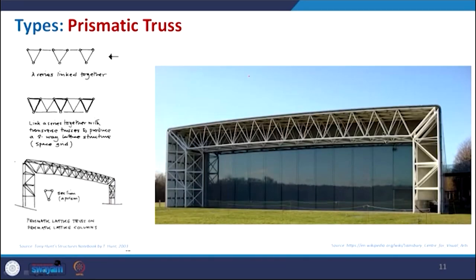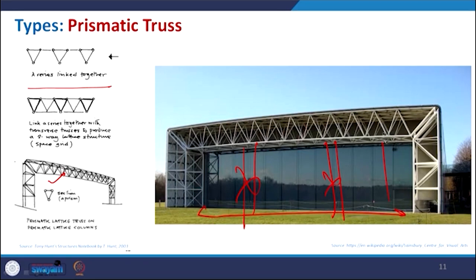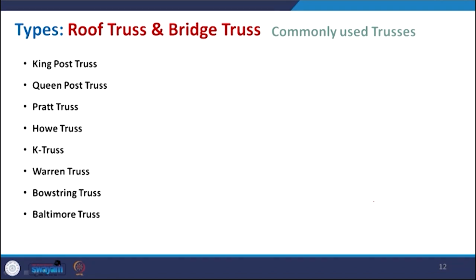For the prismatic truss, a series of triangular trusses are added together — similar to a concert stage setup — creating a span with no column in between. Using 3D truss achieves a column-free space. Common named truss types include king post, queen post, Pratt, K-truss, Warren truss, bowstring truss, and Baltimore truss.